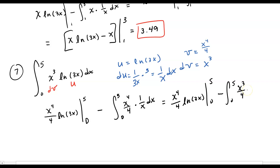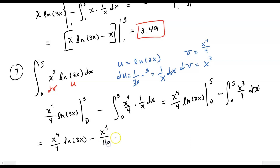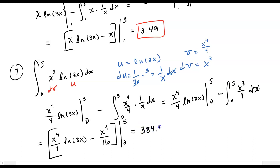So when I integrate x³/4, I get x⁴/4 for the natural log part, and integrating x³/4 gives x⁴/16. So the full expression is x⁴/4 times the natural log of 3x minus x⁴/16, all evaluated from 0 to 5. Taking for granted that you have a calculator, you can evaluate this and get 384.07.